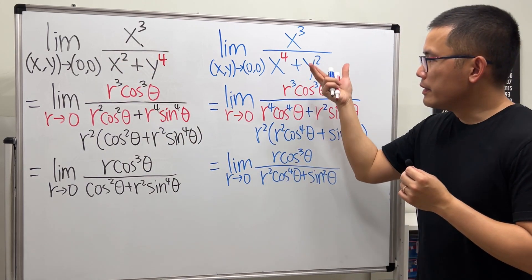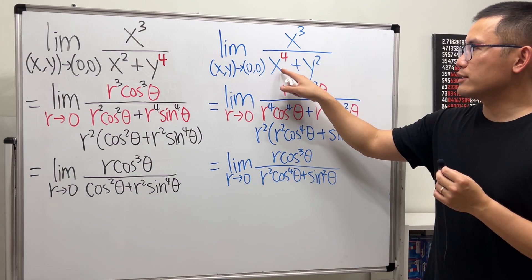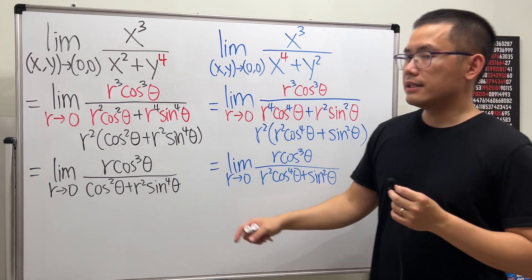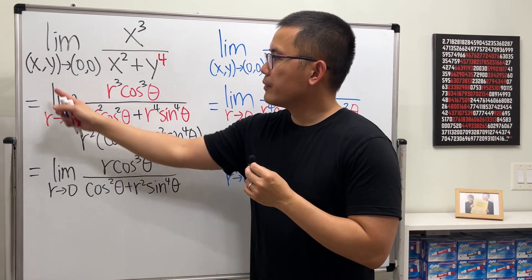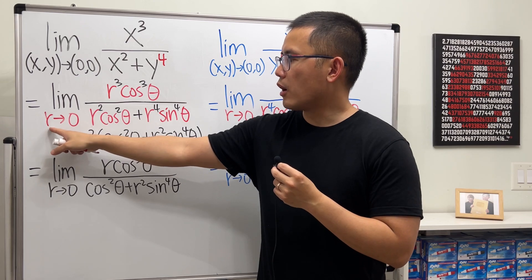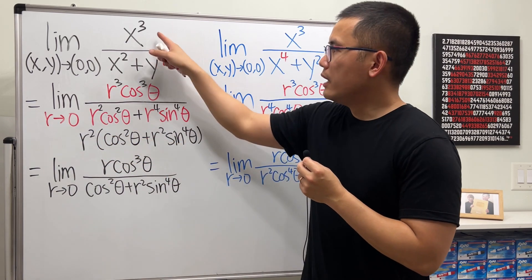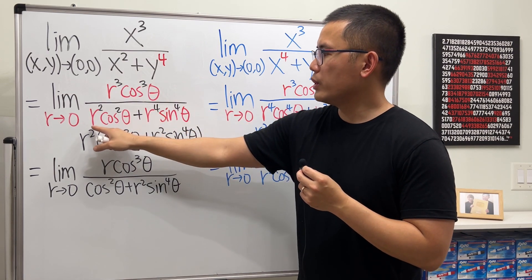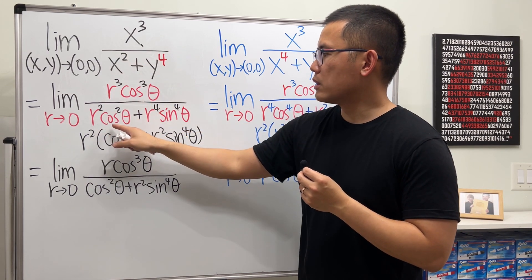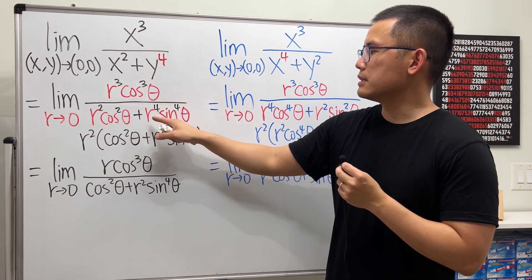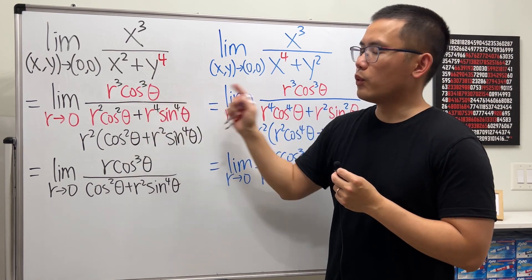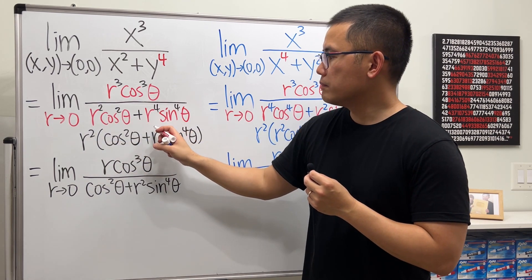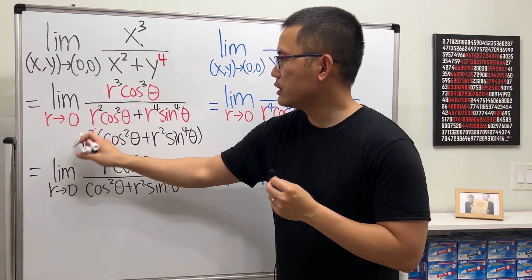Now for this new problem, I've changed it to x³ over (x⁴ + y²). Using polar coordinates, as (x,y) approaches the origin we let r approach zero, x = r·cosθ cubed, and the denominator becomes r²·cos²θ plus (r·sinθ)⁴.